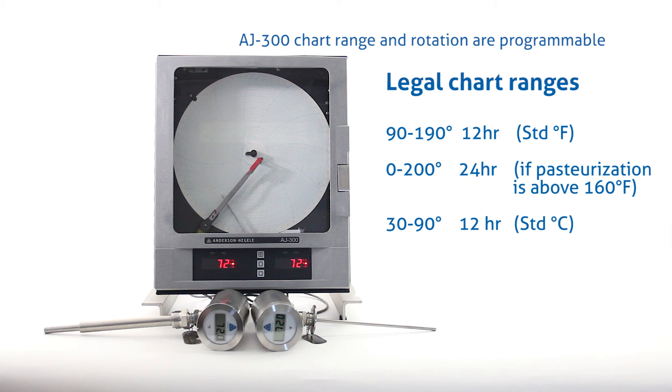There is also a 0 to 200 degree, 24 hour Fahrenheit chart. That can only be utilized if you are pasteurizing above 160 degrees Fahrenheit, and that chart will have two degrees per division. The Celsius chart is a 30 to 90 degree, 12 hour chart. That is the standard Celsius chart.